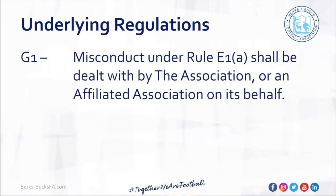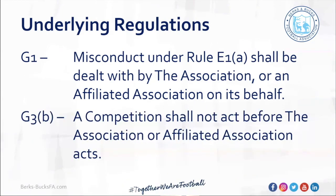Two final regulations worth noting: FA Rule G1 states that any misconduct under Rule E is dealt with by the association or an affiliated association on its behalf — so we're delegated that authority by the FA to take action on their behalf. And Rule G3B states that a competition shall not act before the association or affiliated association acts, meaning where there is a serious incident — a match abandoned or a player having played whilst under suspension — it's the county FA's responsibility to investigate and act first.